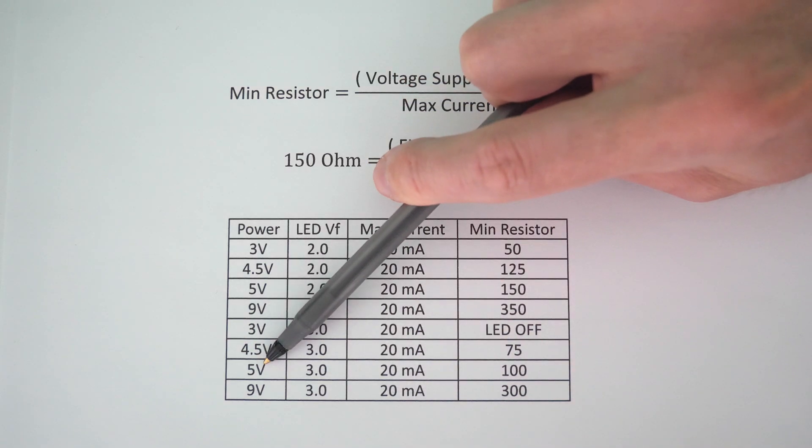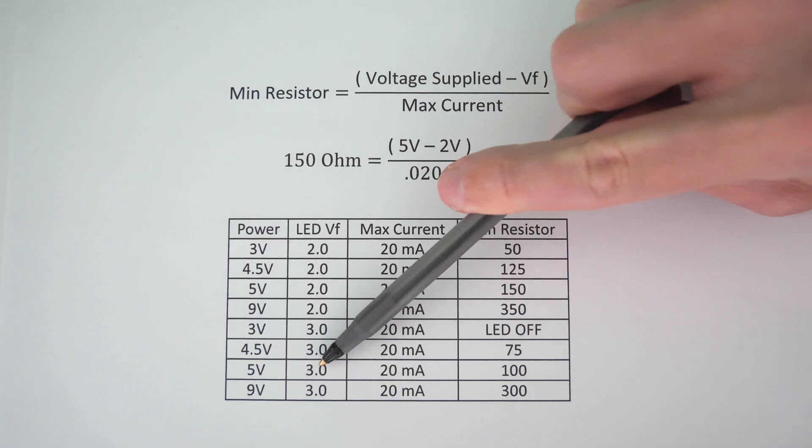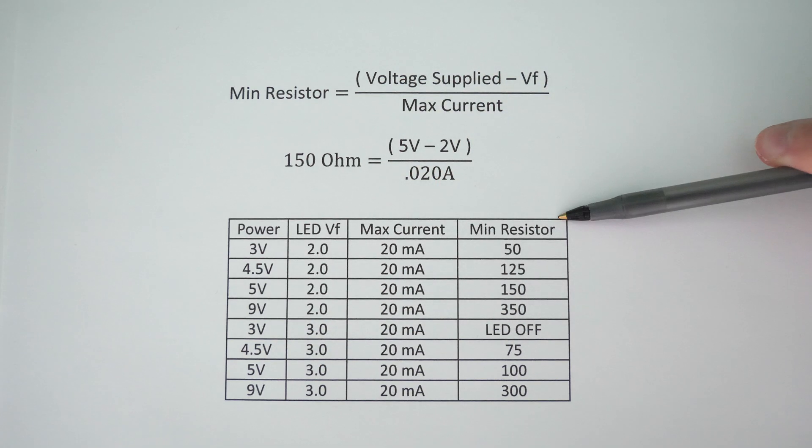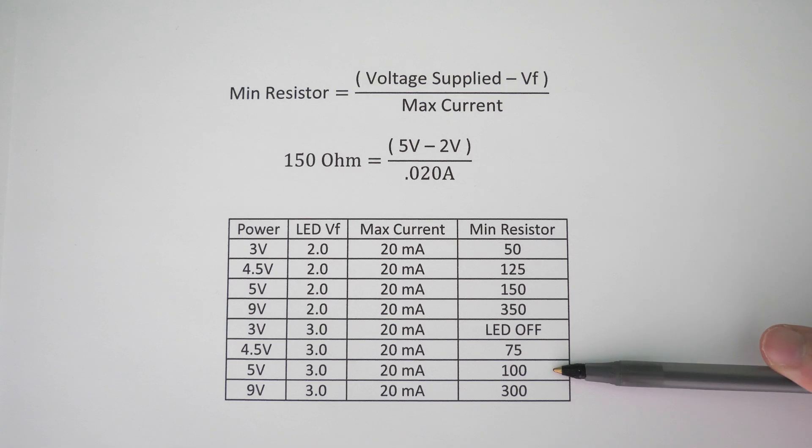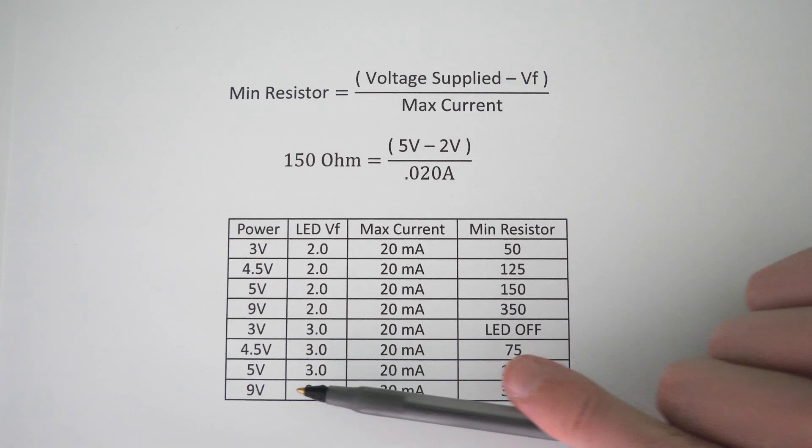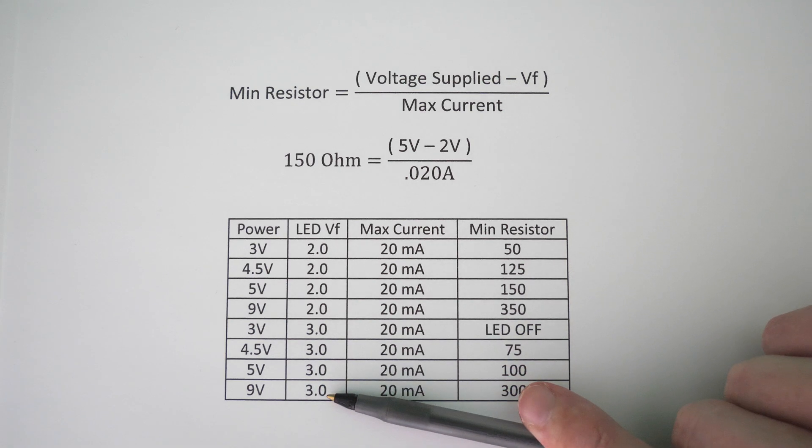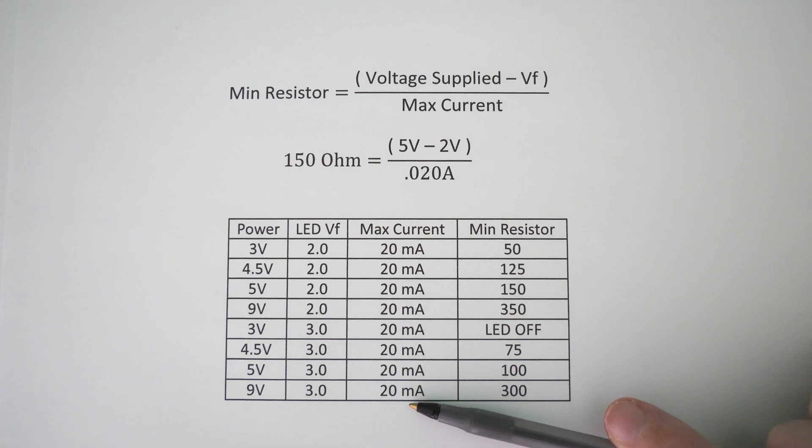And maybe a blue LED would have a forward voltage drop closer to 3 volts. And if that's the case, and we have a 5 volt supply voltage with a blue LED, then our minimum resistor value needed is actually smaller. It's actually 100 ohms, because the forward voltage drop across the LED is larger. Now if you increase the voltage to say 9 volts, you have the same forward voltage drop across the LED, the same max current rating, but you are going to need a larger resistor value whenever you have a larger supply voltage.